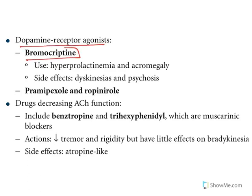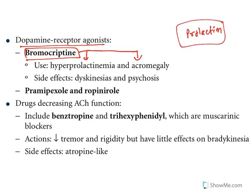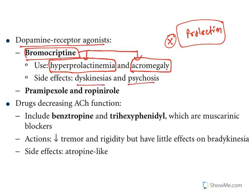Bromocriptine is a dopamine receptor agonist, but its major use is to treat hyperprolactinemia and acromegaly. Prolactin hormone is activated in nursing mothers to enhance lactation, and dopamine inhibits prolactin levels. That is the reason why bromocriptine is used when someone has excessive prolactin levels — hyperprolactinemia. Acromegaly is due to excess growth hormone stimulation, and that is also inhibited by dopamine stimulation via bromocriptine. Side effects: dyskinesia and psychosis.